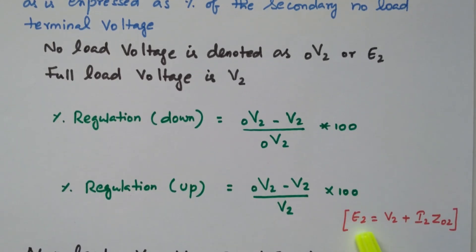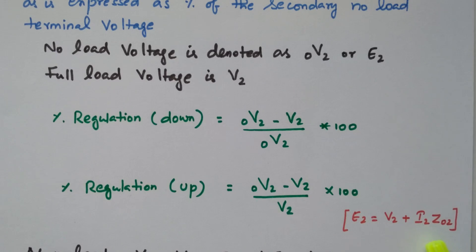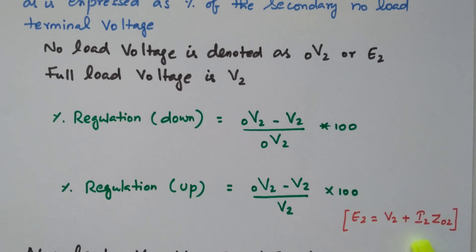Now we will see the derivation. E2 is the very basic equation — E2 is the EMF induced in the secondary circuit. That is equal to V2 plus I2·Z02. V2 is the terminal (load) voltage. The EMF induced is converted into terminal voltage plus some amount of drop in the circuit due to inductive and resistive drop, that is called the impedance drop Z02. So E2 equals the voltage available at the terminal plus some part of drop due to the resistance and inductance of the secondary winding.